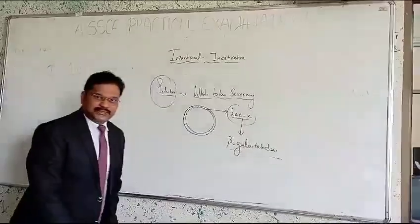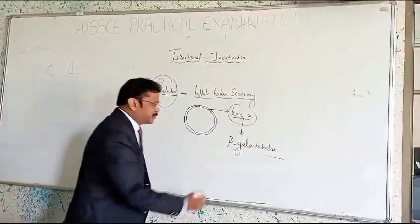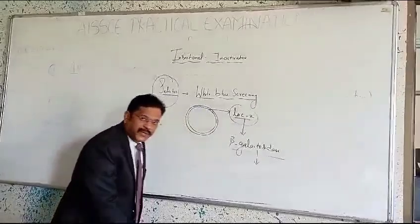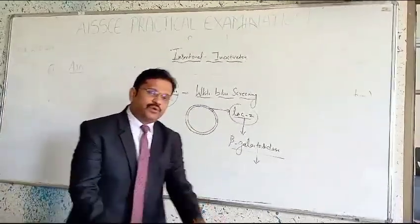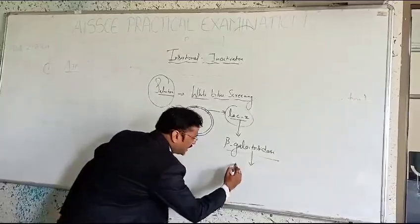This beta-galactosidase is very much essential. What it does is, beta-galactosidase breaks down a chromogenic substance. What is that substance? What is X-gal?